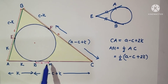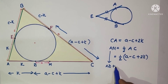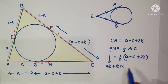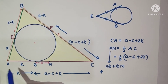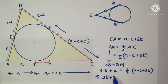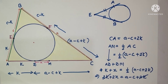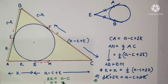We need to prove X equals (a minus c) divided by 2. We know AM equals AD plus DM, so AM equals K plus DM equals K plus X. Setting this equal to half of (a minus c plus 2K) and multiplying both sides by 2 gives 2K plus 2X equals a minus c plus 2K. The 2K terms cancel from both sides, leaving 2X equals a minus c, therefore X equals (a minus c) divided by 2.